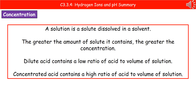If we turn that into terms of acids: if we refer to a dilute acid, that's got a very low ratio of acid to the volume of the solution. If we're talking about a concentrated acid, then we've got a really high ratio of acid to the volume of the solution. So dilute has a low ratio of solute to volume, whereas concentrated has a high ratio of solute to the volume of solution.